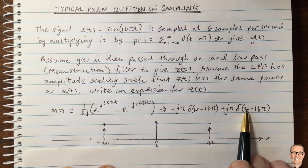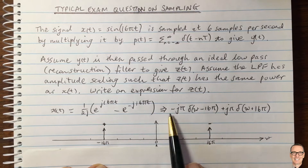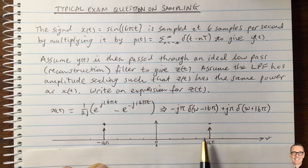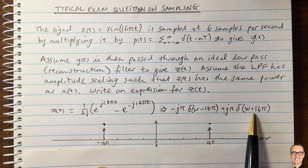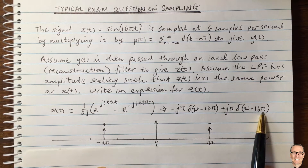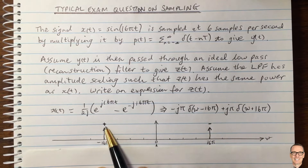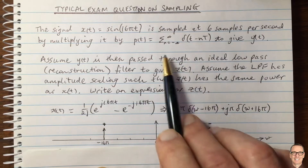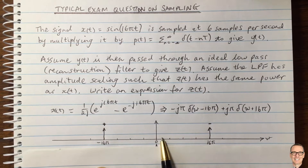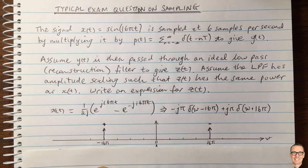What we know about sampling is that you get copies of your Fourier transform centered at the sampling frequency — that's what you find by doing all the mathematics, but it's an important property. We can use that property to answer this question more quickly. Let's plot the Fourier transform of Xt: it has a delta function at 16π (marked negative for phase) and a delta function at minus 16π (marked positive).